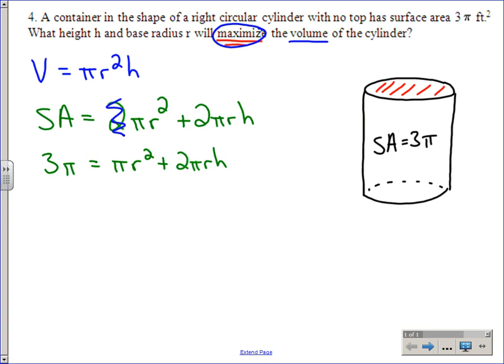I'm going to rearrange it: bring the πr² over to the other side, then divide both sides by 2πr. That gives us our h value: h = (3π - πr²)/(2πr).